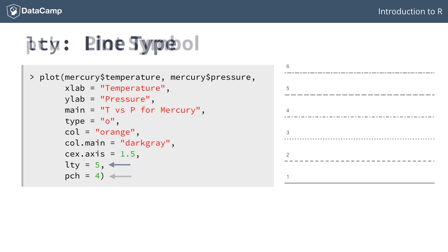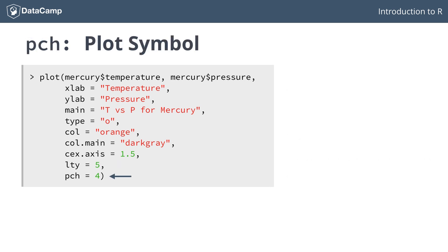Last but not least, we have the pch argument, which specifies a plot symbol for the points you are plotting. There are more than 35 different symbols for plotting, going from pluses and small octagonals to stars and hashtags.